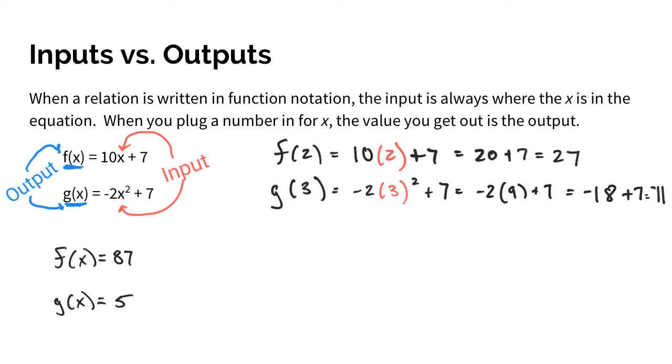So to solve that one for the first example, we start with 87 is equal to 10x plus 7. So my 87 is what f(x) is equal to, so that goes in this location, and it's still equal to 10x plus 7. My goal is to solve for x. So in that example, you would just subtract 7 on both sides, and then you have 80 is equal to 10x, and you divide by 10, so x would equal 10.